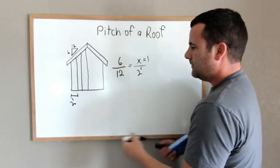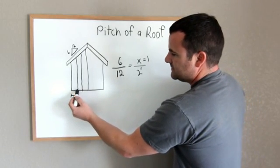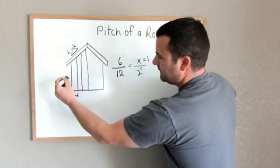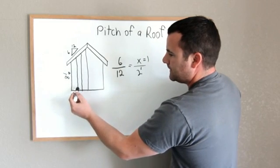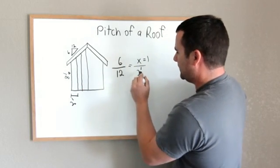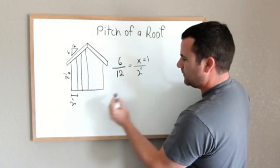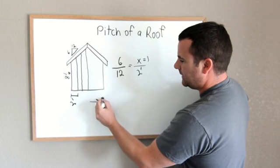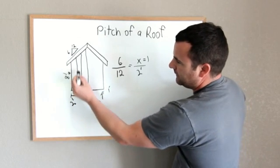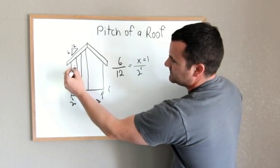So this stud - let's say this stud is 8 feet right here, this first one. You know, based on your calculation, for every 2 feet horizontal this way, it'll rise 1 foot. So you know that this stud will be a 9-foot stud.